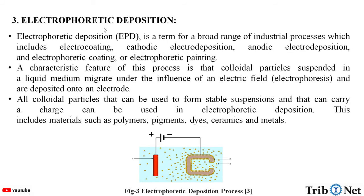Next is electrophoretic deposition. Electrophoretic deposition, or EPD, is a term for a broad range of industrial processes which includes electrocoating, cathodic electrodeposition, anodic electrodeposition, and electrophoretic coating or electrophoretic painting. A characteristic feature of this process is that colloidal particles suspended in a liquid medium migrate under the influence of an electric field — electrophoresis — and are deposited onto an electrode. All colloidal particles that can be used to form stable suspensions and that can carry a charge can be used in electrophoretic deposition.